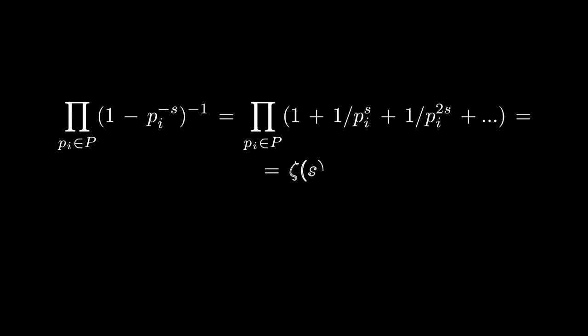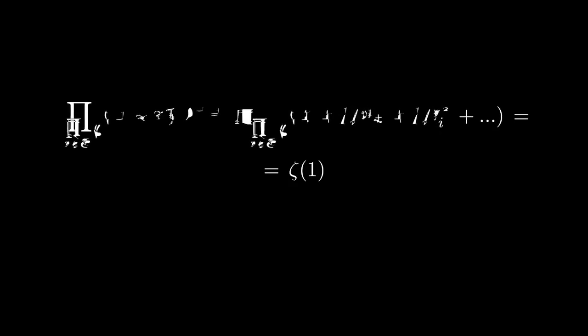And if you think hard about the right-hand side, you realize it gives Riemann's zeta function. And here is the magic. Plugging in one for s, we get harmonic series, which diverges. So the left side must have infinitely many factors, which shows that the set of prime numbers is infinite.